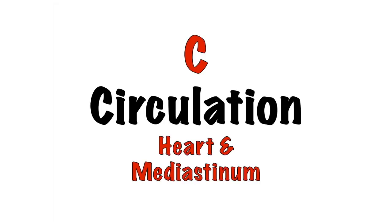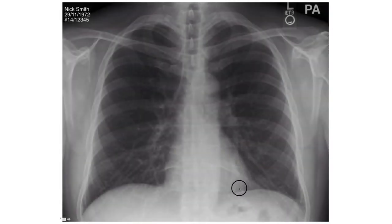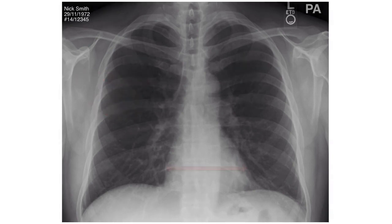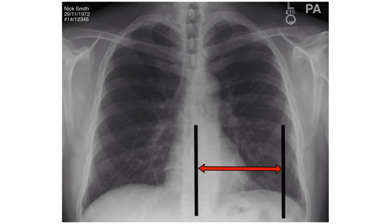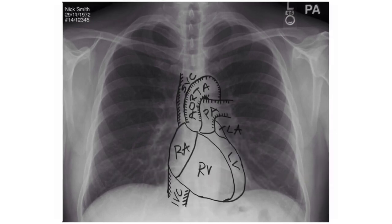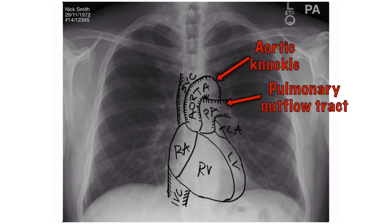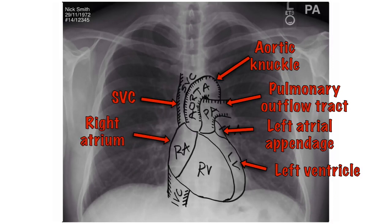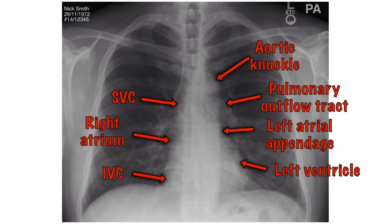C stands for circulation — heart and mediastinum. Look at the size, shape, and border of the heart and mediastinum. Heart size is assessed using the cardiothoracic ratio: in a PA film, the heart occupies less than 50% of the width of the thorax; a ratio greater than 50% in a PA view is abnormal and indicates cardiomegaly. Structures making up the left border of the mediastinum include the aortic knuckle, pulmonary outflow tract, left atrial appendage, and left ventricle. On the right side: the superior vena cava, the right atrium, and the inferior vena cava. These borders should be well defined — a blurred edge could indicate collapse or consolidation of the lung.